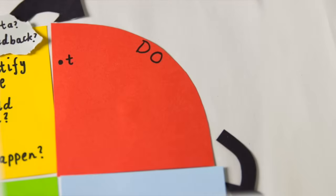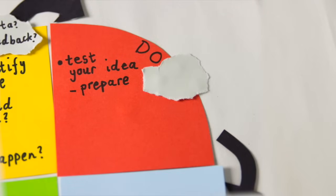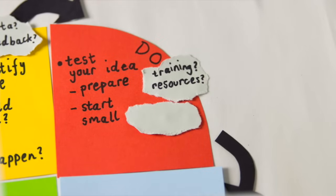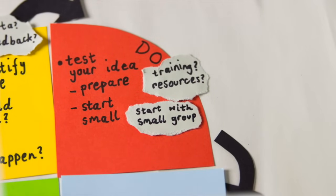The do stage is putting the change to the test carefully. First, you need to prepare for your test. For example, giving the staff training they'll need or making sure all necessary resources are in place. Once everything's in place, test the task out on a small scale. Try it out on a patient or a small group of patients first.